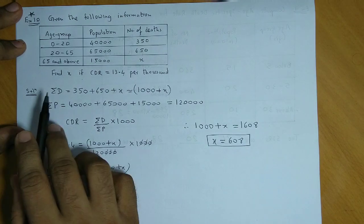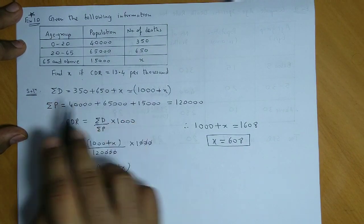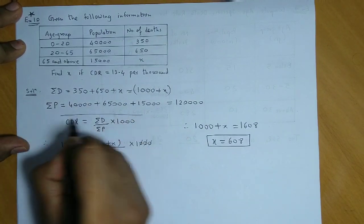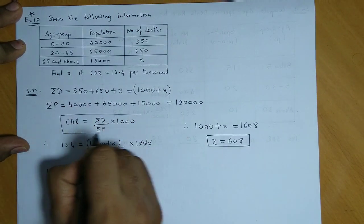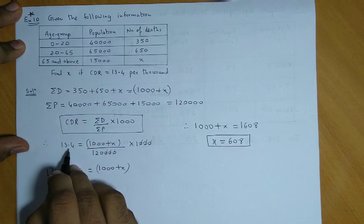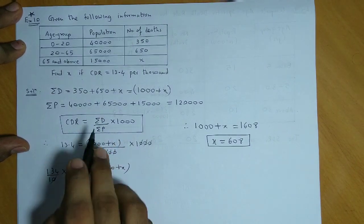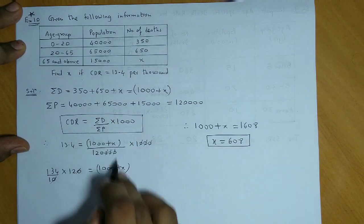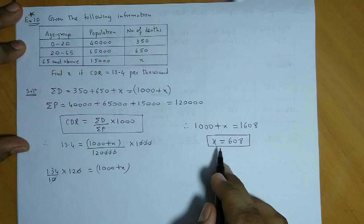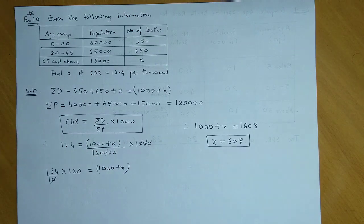To summarize: we found total deaths and total population, wrote the formula for CDR, substituted the given CDR value along with summation D and summation P, simplified the equation, and obtained the missing value x as 608.